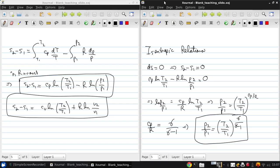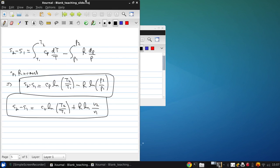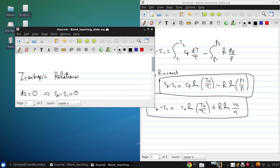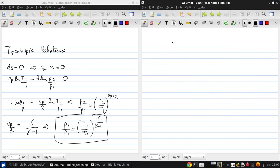Now, we can also write equivalent expressions using other combinations of properties. So we can write v2 over v1 is equal to t2 over t1 to the 1 over gamma minus 1.